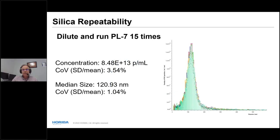Repeatability: PL7 diluted and run 15 times gave an overall concentration of 8.5 × 10¹³ particles per mL with a coefficient of variation of 3.5%. Median size was 121 nanometers with a coefficient of variation of 1%. That gives a strong sense of the measurement repeatability, which is hugely important.